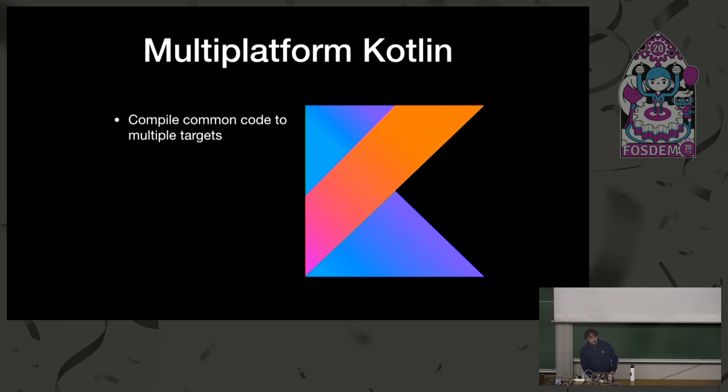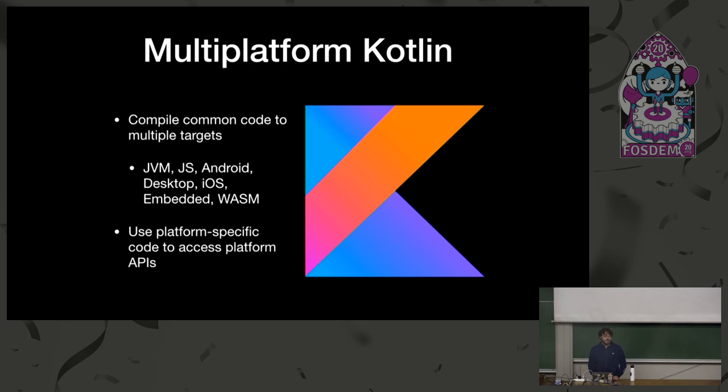The idea of multi-platform is to take common code and compile it to multiple targets — things like JVM, JavaScript, Android, et cetera. In addition to that shared common code, you use platform-specific code to talk to any of the individual platform APIs. The general idea is making it easy to do the custom things when you have to, but share the things that don't need to be customized per platform.